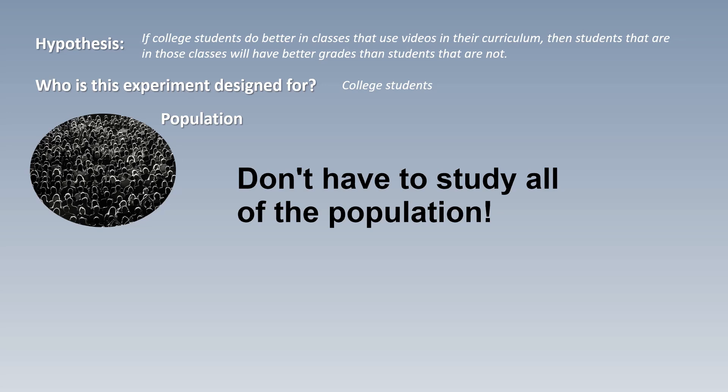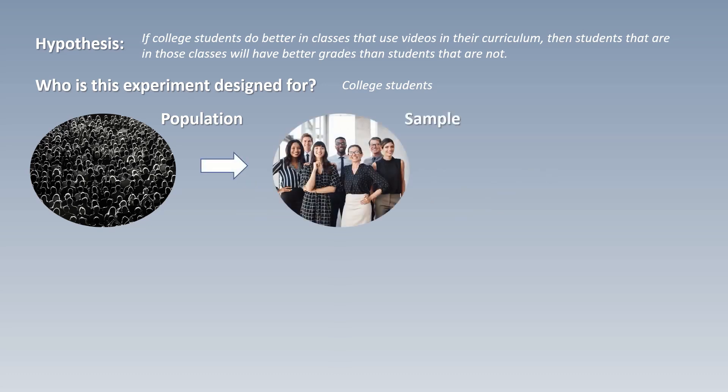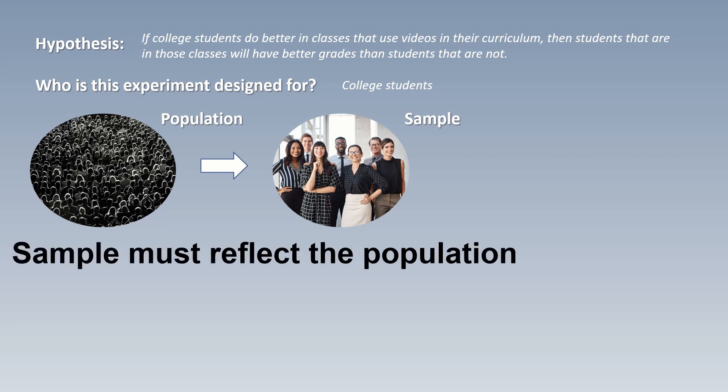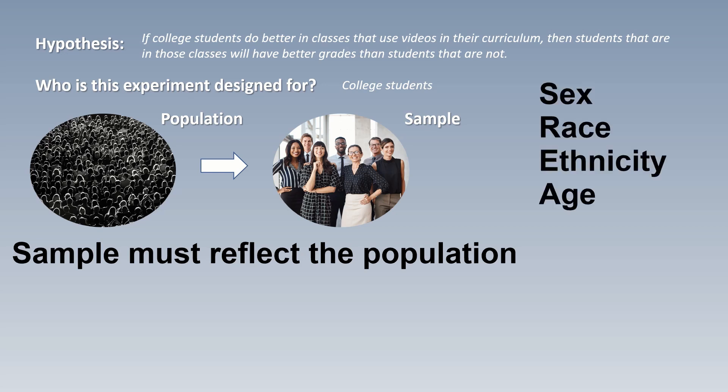The good news is that you don't have to. Because populations are so large, we have to pull a smaller group from that larger population. We call this group the sample, and it's composed of people who are volunteering to participate in the experiment. Not everyone who volunteers may be selected, though. It is always important to remember that your sample must reflect the larger population that your experiment is meant to apply to. This usually consists of things like sex, race, ethnicity, and age.